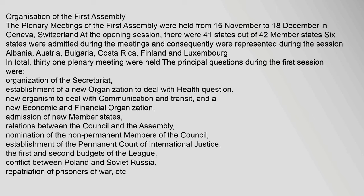The plenary meetings of the First Assembly were held from 15 November to 18 December in Geneva, Switzerland. At the opening session there were 41 states out of 42 member states. Six states were admitted during the meetings: Albania, Austria, Bulgaria, Costa Rica, Finland, and Luxembourg. In total, 31 plenary meetings were held. The principal questions during the first session were: organization of the Secretariat, establishment of a new health organization, new organism for communications and transit, a new economic and financial organization, admission of new member states, relations between the Council and the Assembly, nomination of non-permanent members of the Council, establishment of the Permanent Court of International Justice, the first and second budgets of the League, and the conflict between Poland and Soviet Russia.